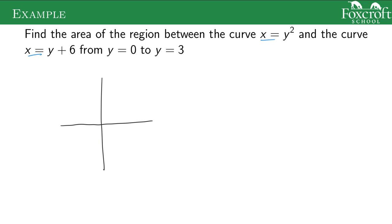x equals y squared looks like this. And x equals y plus 6 looks like this. And we're trying to do that between 0 and 3. So y equals 0, or sorry, y equals 0 and y equals 3. So y equals 0 is down there, y equals 3 is actually where they meet.